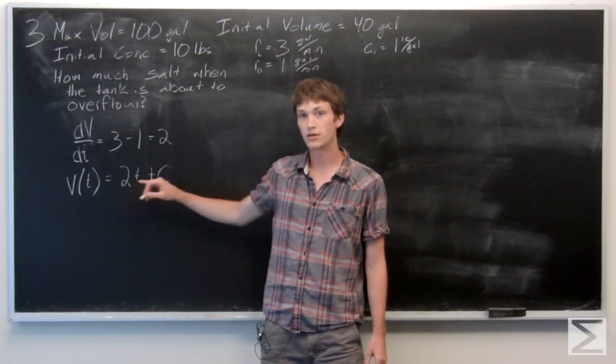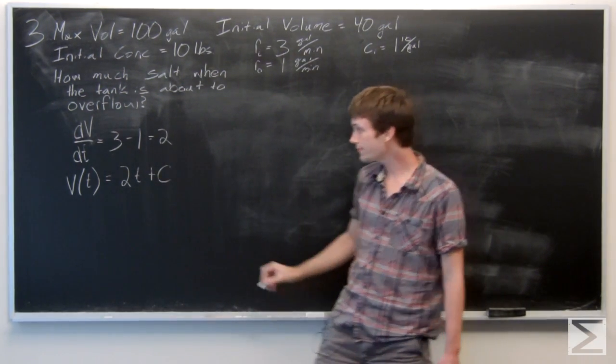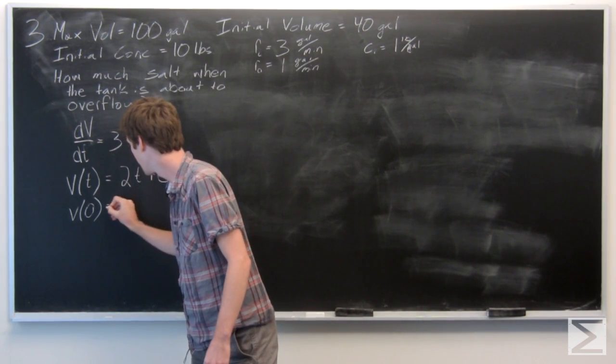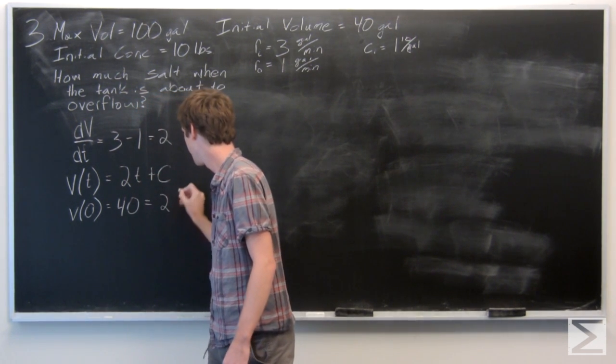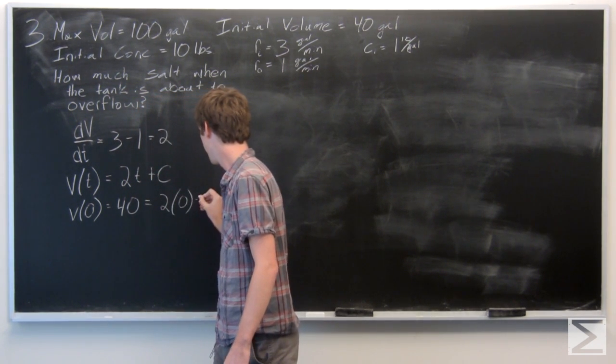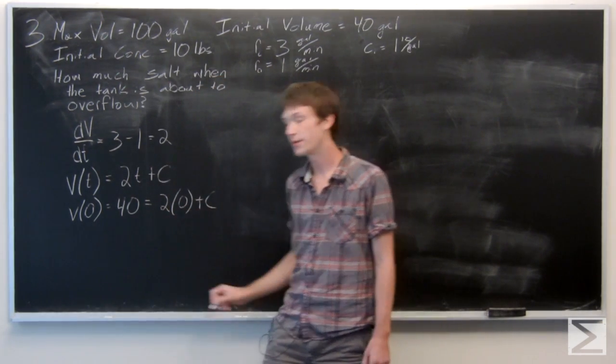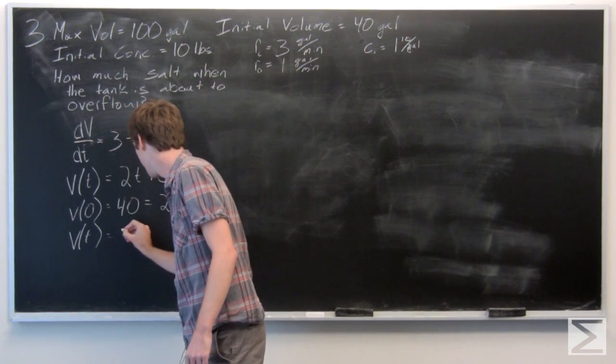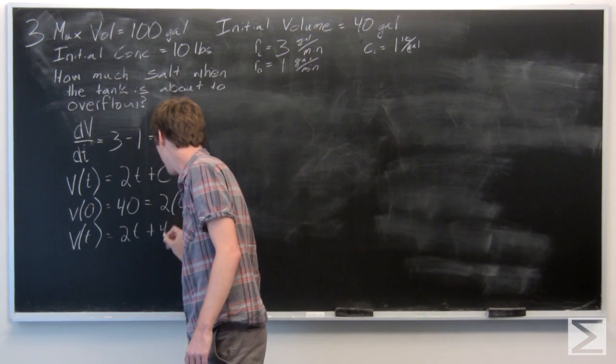Now we know what the initial volume is. v of 0 is 40 gallons. And we get that c is just 40, giving us v of t.